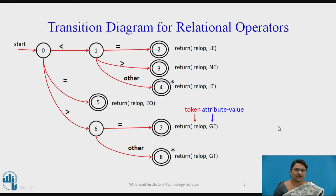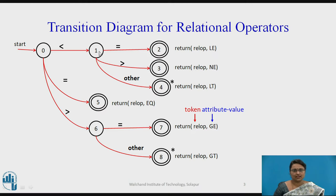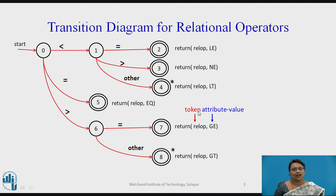Consider this transition diagram having these many states — it is for the relational operators. The relational operators include less than, equal to, greater than, not equal to, equal to, and greater than or equal to. Every transition diagram, whenever it reaches the accepting state, returns two things: one is a token, and another is an attribute value.